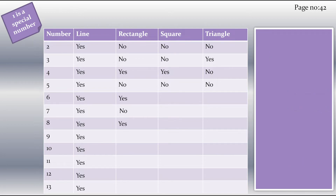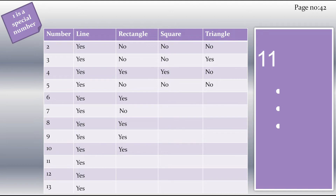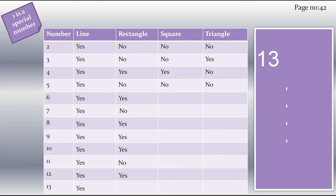Now let's check for nine — we made a rectangle of 3×3, so yes for nine. For ten, we can arrange the dots in the form of 2×5, so yes for ten. For eleven, we can't make a rectangle, so no for eleven. For twelve, we made a rectangle of 3×4, so yes for twelve. For thirteen, we can't make a rectangle with thirteen dots, so no for thirteen.